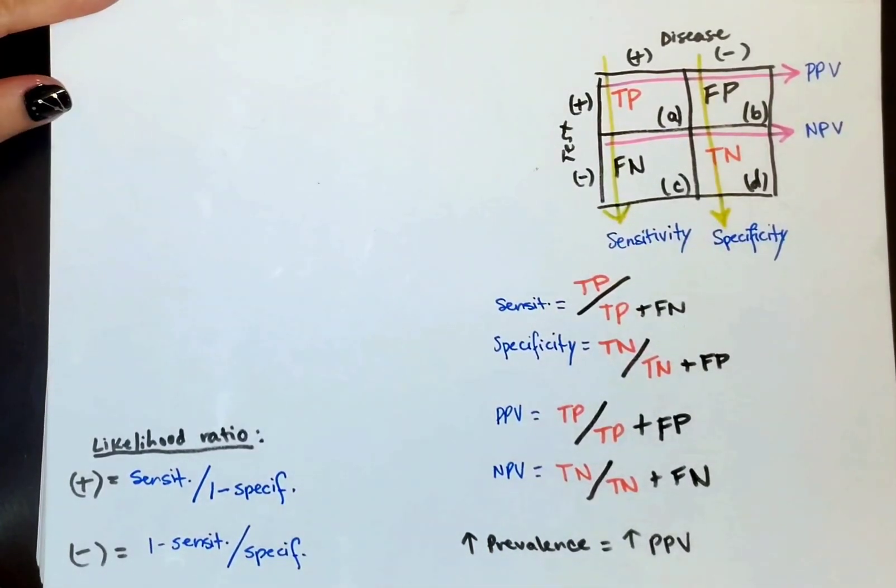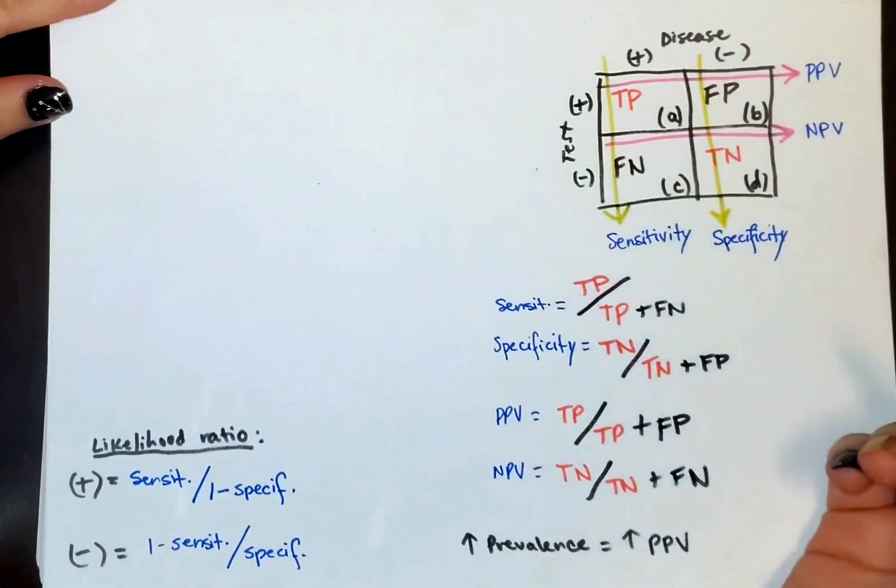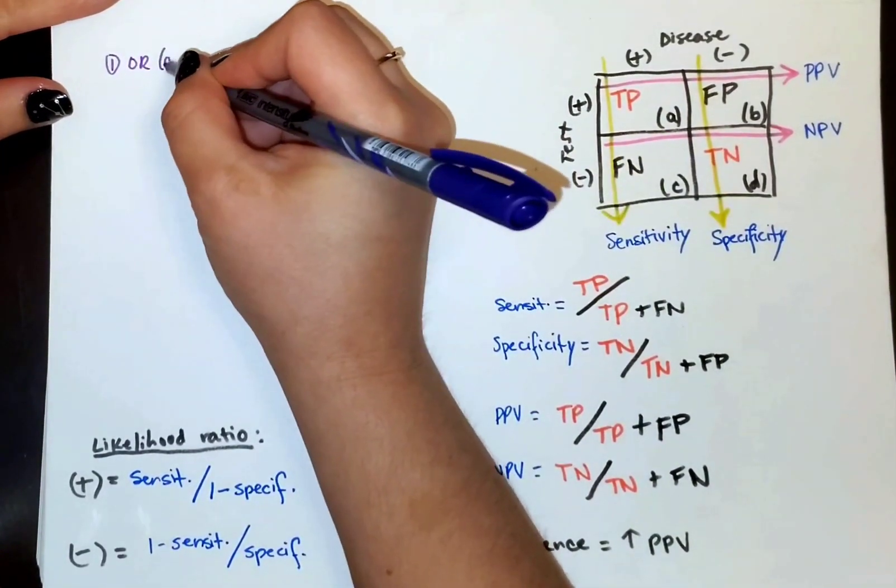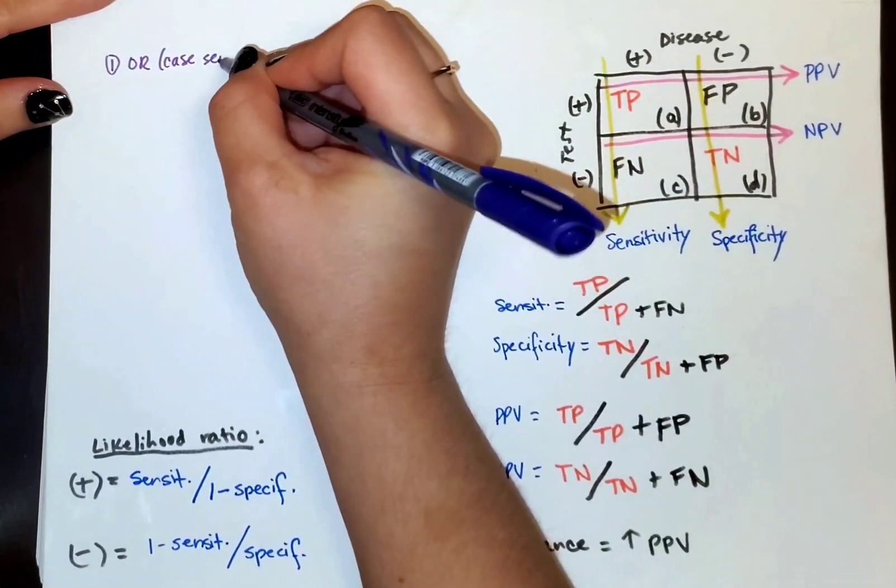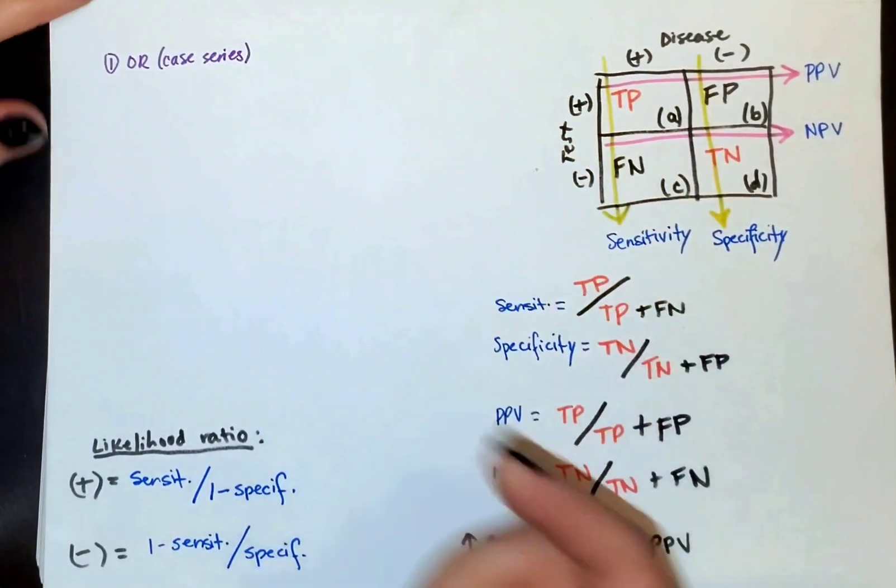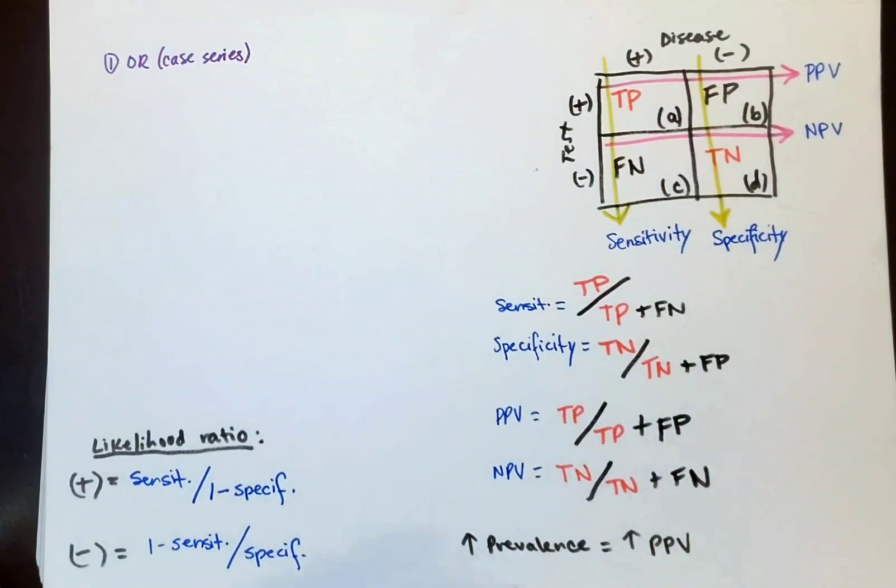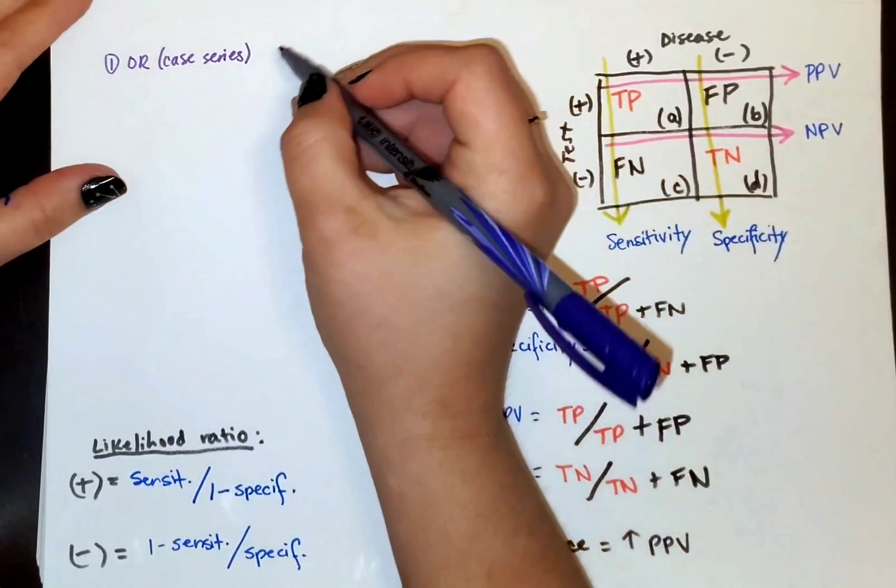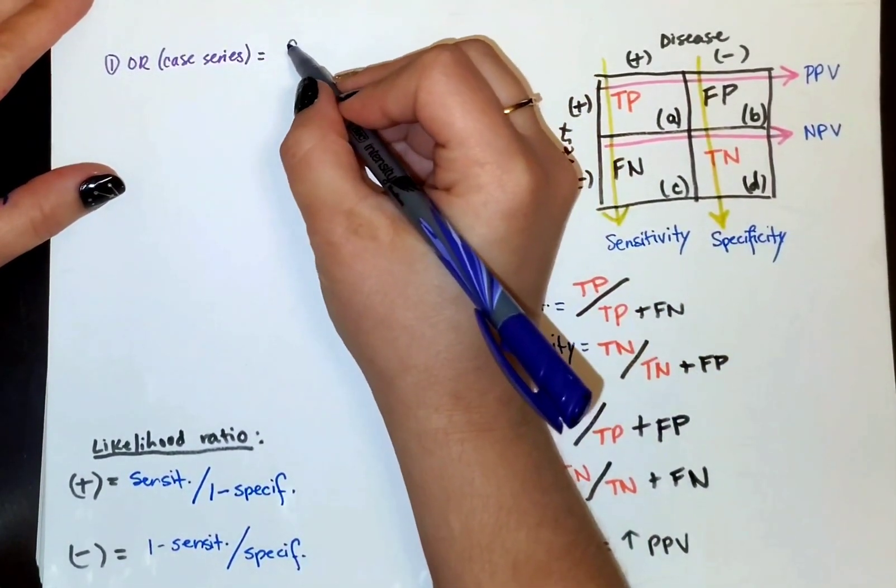All right, so now we're going to get to the good stuff, good equations. So first off, we've got odds ratio. This is associated with case series where it's important to know we care about disease status first. This patient has the disease and then we're going to figure out the relationship that this disease has with an exposure.